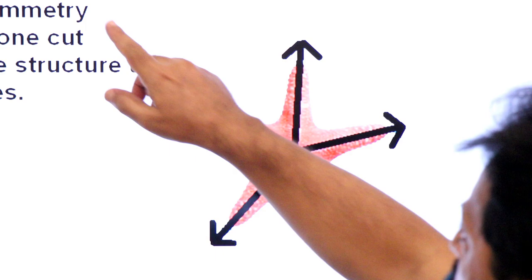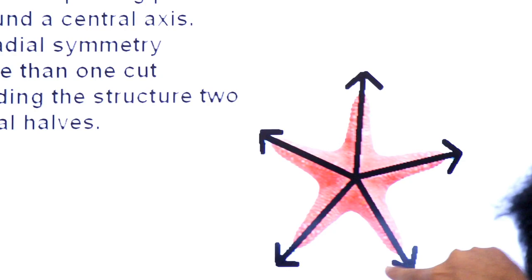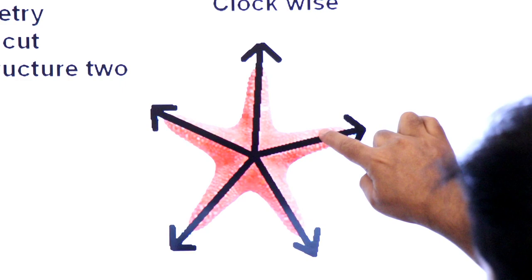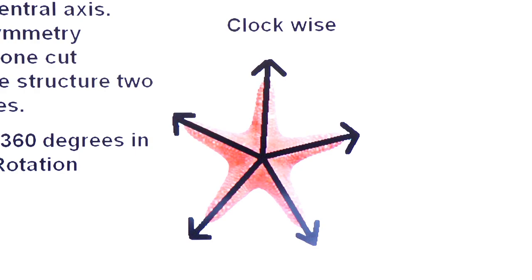Now you will see symmetry. This is a repeating pattern. We will see clockwise. Clockwise, first arm, second arm, third arm, fourth, fifth arm.